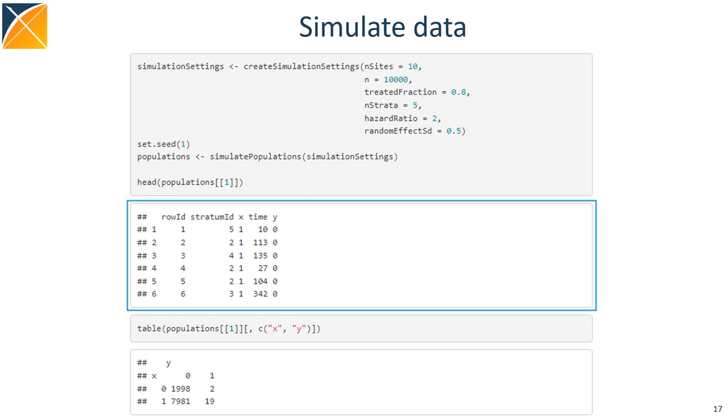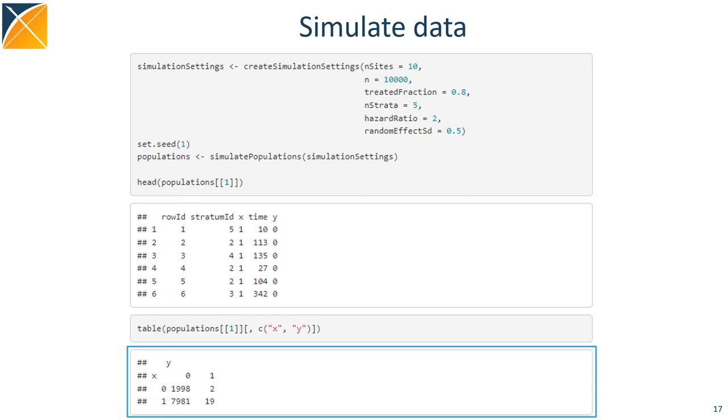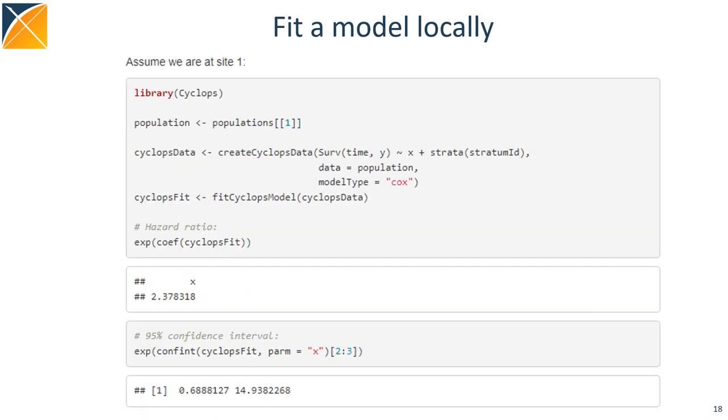If we look at the 2x2 table, we see we have lots of people. But in one of the treatment groups, only two persons have the outcome.